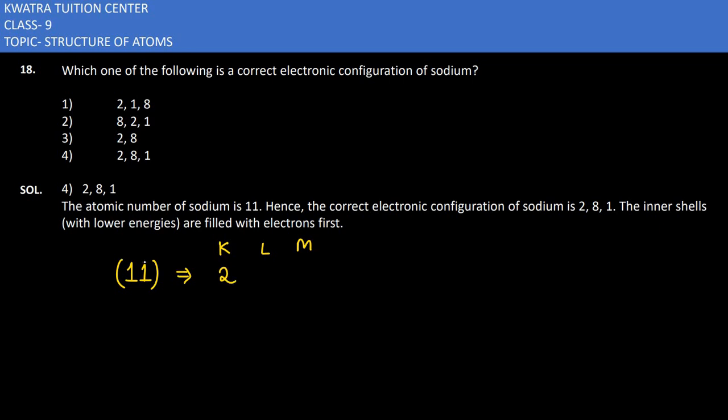K shell gets 2 electrons, L shell gets 8 electrons, and M shell gets 1 electron. This completes the distribution: 2 plus 8 plus 1 equals 11, and the valency of sodium is 1.